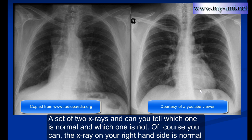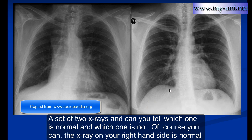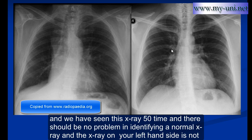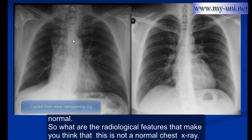Here is a set of two x-rays. Can you tell which one is normal and which one is not? Of course you can. The x-ray on your right hand side is normal — we have seen this x-ray many times and there should be no problem identifying a normal x-ray. The x-ray on your left hand side is not normal. So what are the radiological features that make you think this is not a normal chest x-ray?